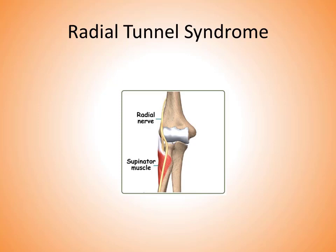At the radial tunnel, the signs and symptoms can be confused with lateral humeral epicondylitis. It can also occur proximal to the wrist between the brachioradialis and the extensor carpi radialis longus muscles.